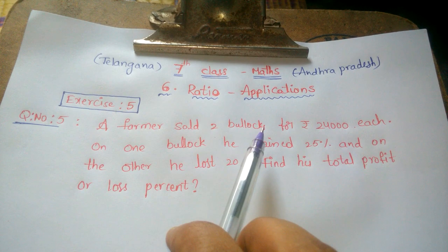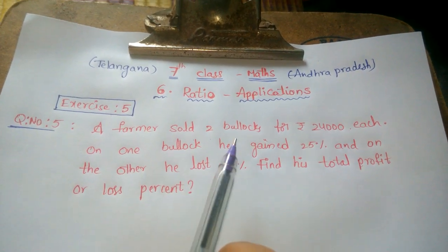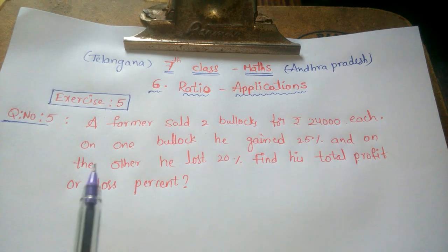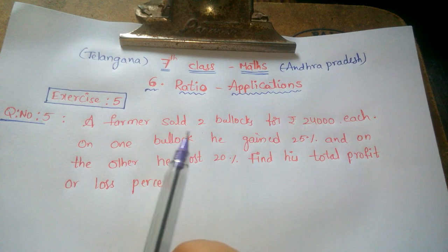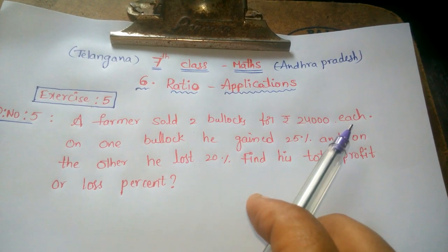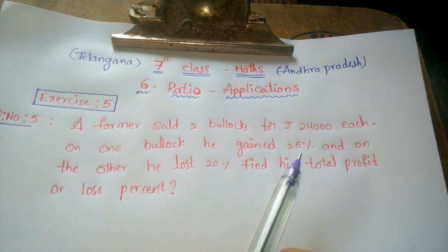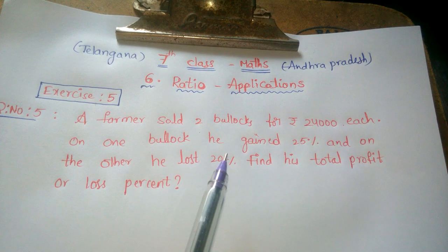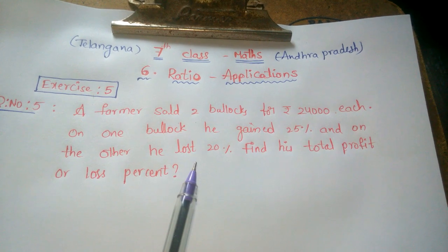The question is: a farmer sold two bullocks for rupees 24,000 each. On one bullock he gained 25% and on the other he lost 20%. Find his total profit or loss percent. We don't know the cost price; we only know the selling price, with a profit percentage of 25% and a loss percentage of 20%. We have to find the total profit or loss percent.